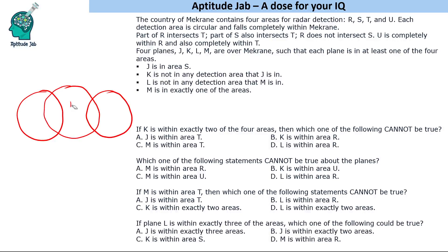Both R and S intersect with T. R does not intersect S, so these are separate. U is completely within R and also completely within T, so U sits in the overlapping region of R and T.